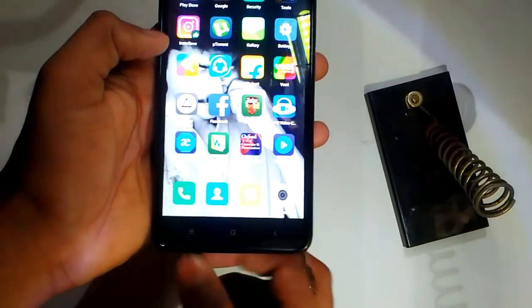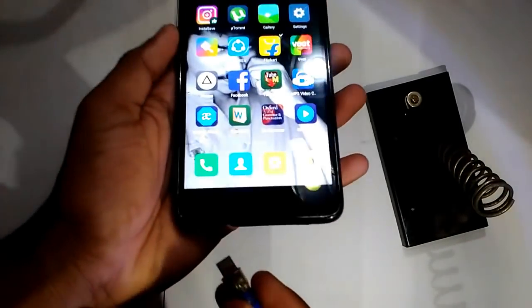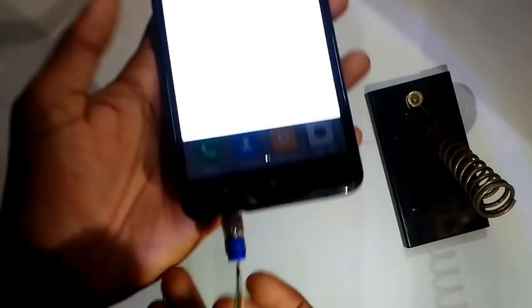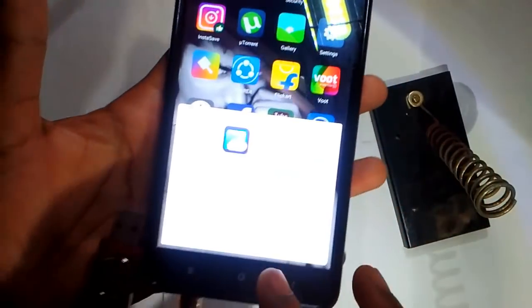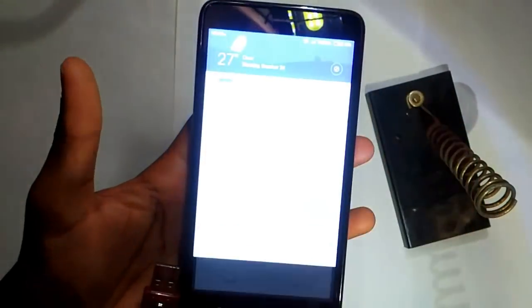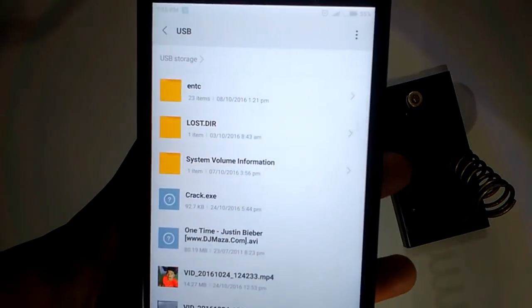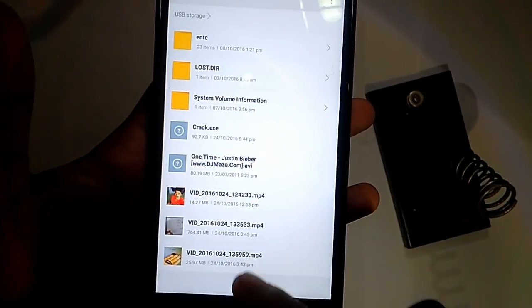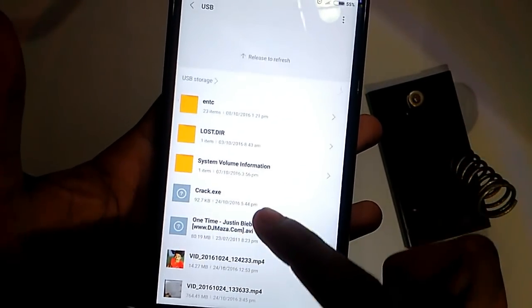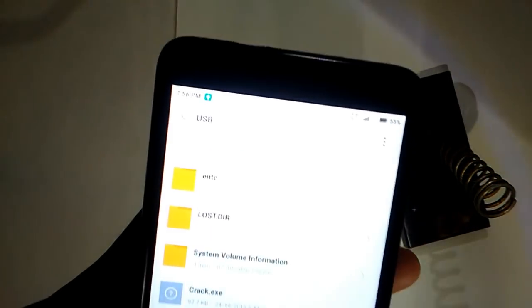So now let's check our OTG pen drive if it is working. Let's plug it inside first. Cancel it. Let's plug it inside. So again the ES file explorer pops up, and here you can see USB storage device connected. So click on that, and here is the USB thing which we saw earlier. The files were in the flash disk. So this is the USB thing.